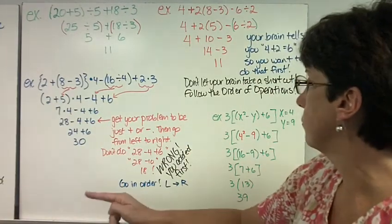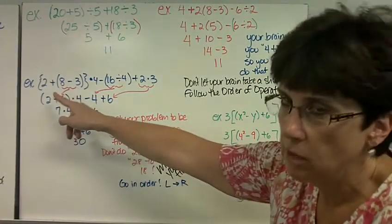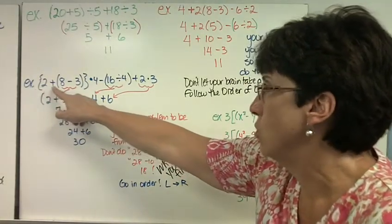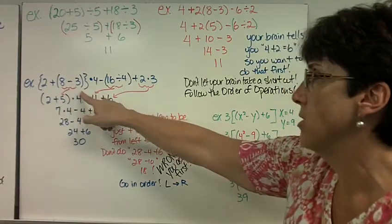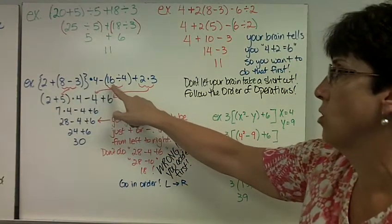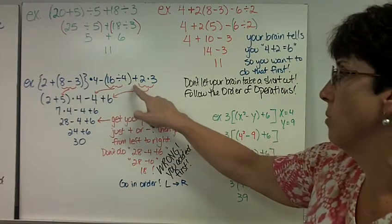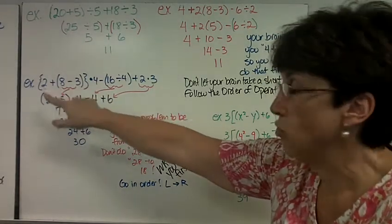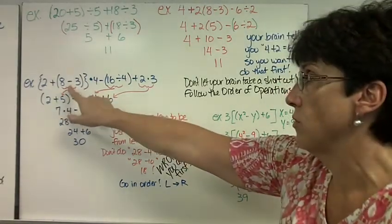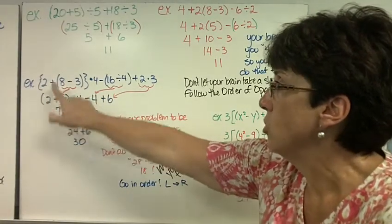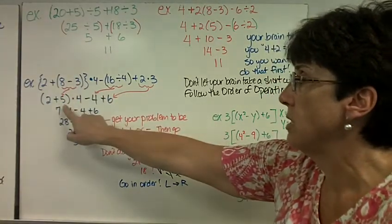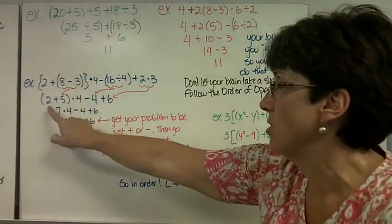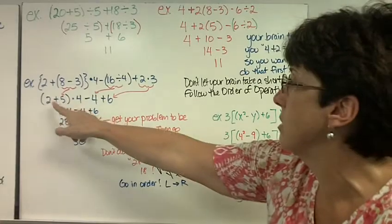Here's our next example. We have the quantity of 2 plus the quantity of 8 minus 3 times 4 minus the quantity of 16 divided by 4 plus 2 times 3. So I have two sets of grouping symbols. I'm going to do the innermost first. 2 plus 8 minus 3 is 5. Now I only have one set of parentheses left.